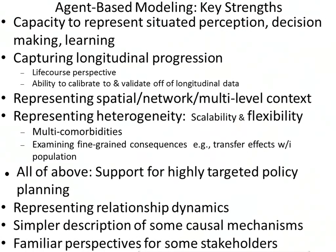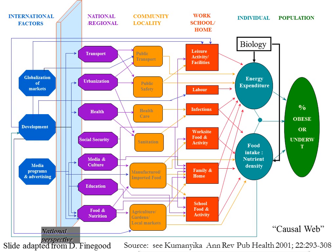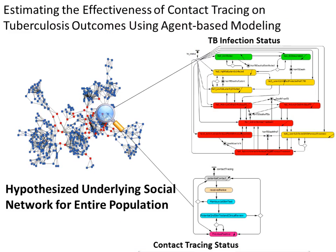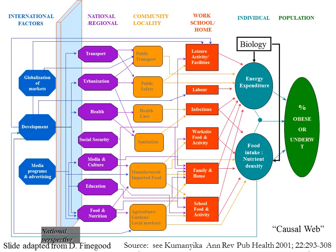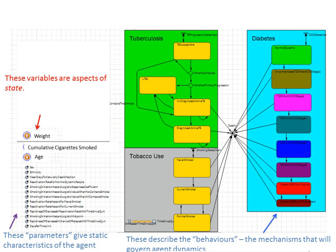We can aim at interventions that take into account a person's history or particular characteristics. In this age, we're increasingly talking about individualized medicine. We can capture aspects of their social network that might allow us to aim a peer intervention specifically at individuals who are vulnerable because of their network context. We can capture aspects of their relationship dynamics with caregivers, whether it's spatial, multi-scale, or individuals within networks, and can capture the occurrence of comorbidities in a single individual.